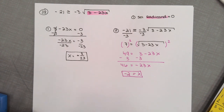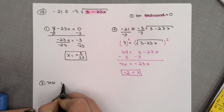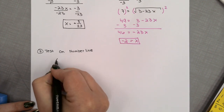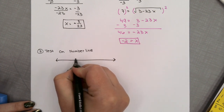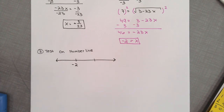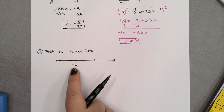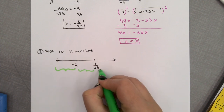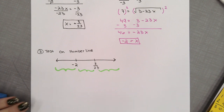You have section 1 (left of negative 2), section 2 (between negative 2 and 3/23), and section 3 (right of 3/23). Test one number from each section in the original inequality: negative 21 greater than or equal to negative 3 times the square root of 3 minus 23x. For section 1, I'll test x equals negative 3. Using a calculator: 3 minus 23 times negative 3 equals 72 under the radical. Negative 3 times the square root of 72 is approximately negative 25.5.